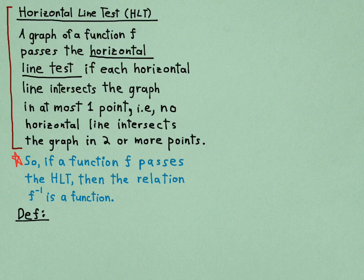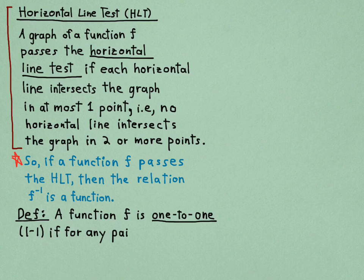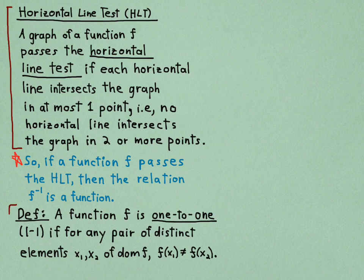We have this definition that's closely related: a function f is one-to-one (written 1-1) if for any pair of distinct elements x₁, x₂ of the domain of f, f(x₁) ≠ f(x₂).